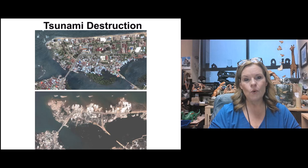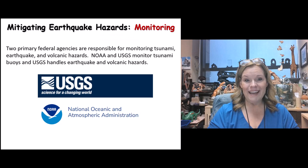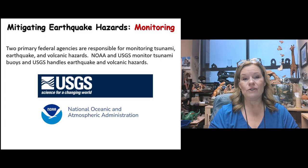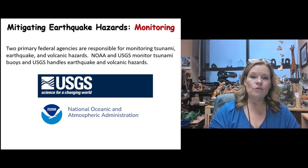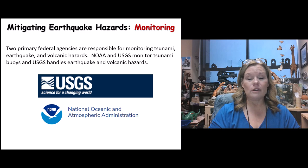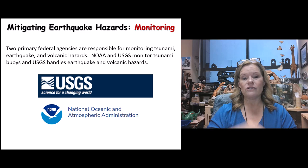There was no warning system in 2004, which is why we now have ways to mitigate earthquake hazards through monitoring. Two agencies predominantly do this: the USGS and NOAA (the National Oceanic and Atmospheric Administration). NOAA operates the DART system — deep ocean buoys with seismograph stations on the ocean floor, connected via satellite relay to monitoring stations around the world, enabling tsunami warnings to be issued.